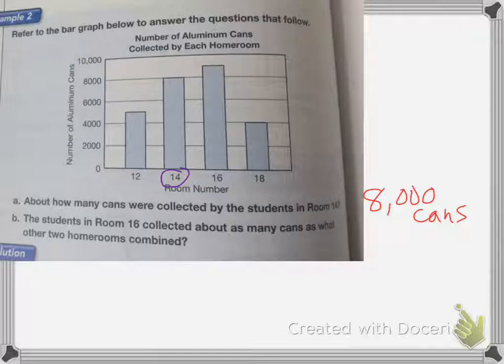And in this next one, it says the students in room 16 collected about as many cans as what other two homerooms combined. So if we look at 16, they gathered, it looks to be about maybe 9,000 cans. So we need to figure out what two rooms combined to equal 9,000 cans.